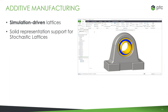We're now also able to support solid representation for stochastic lattices — these are the randomized ball-and-beam structures that we've put a lot of time and effort into building over the last couple of releases. They have great uses especially in the medical field, for example if you're building bone grafts. Now going forward we're able to build solid representations of that geometry.